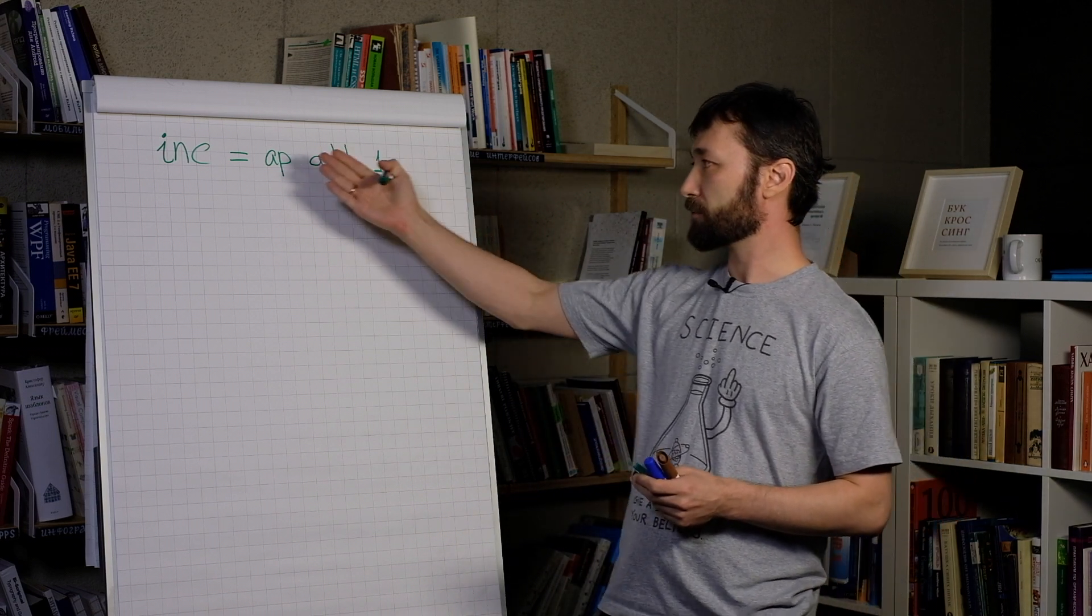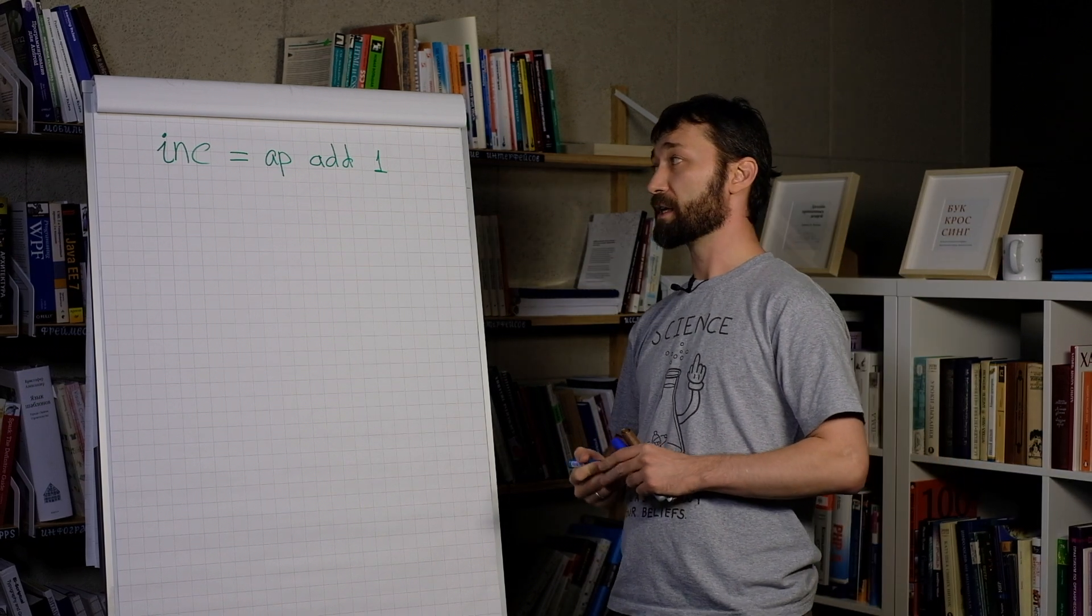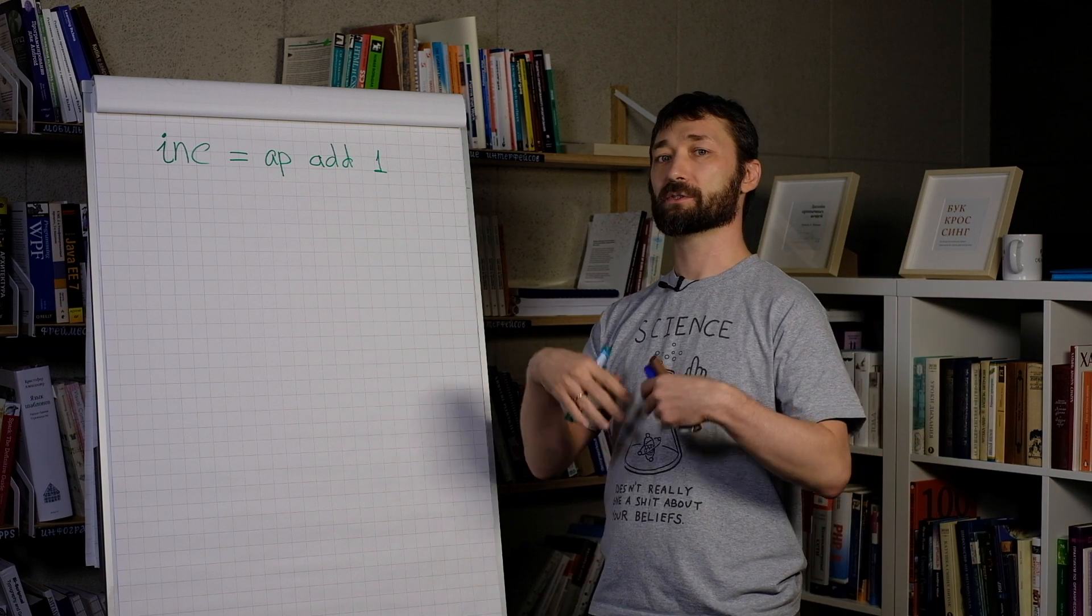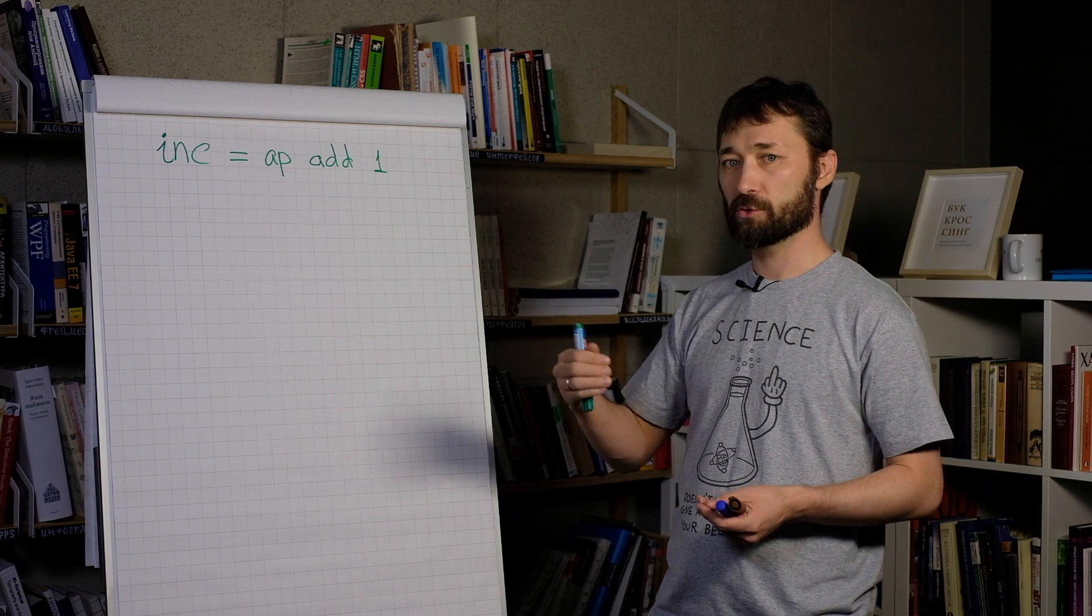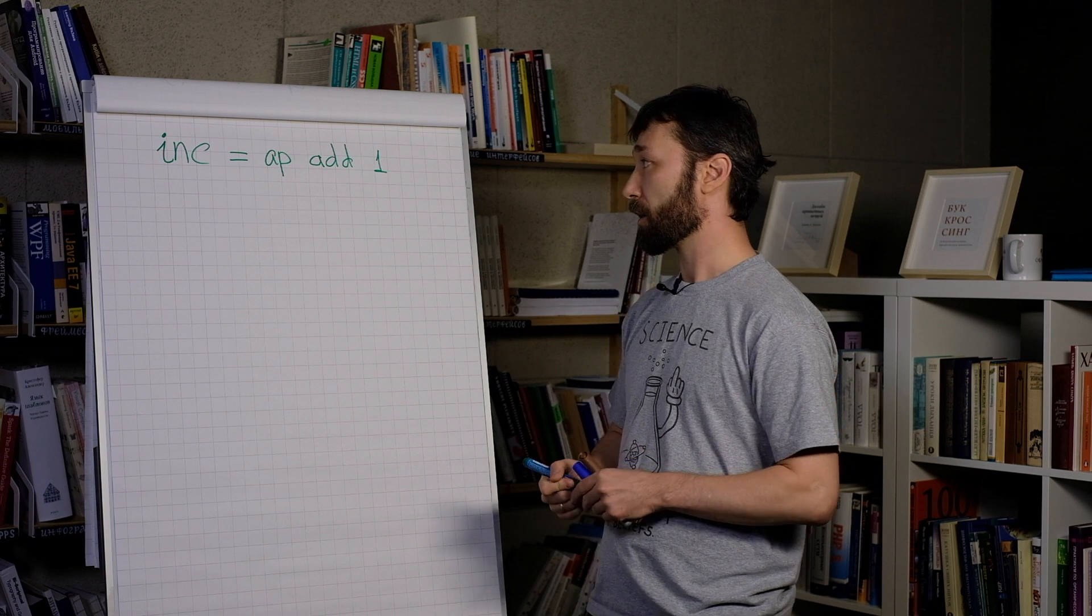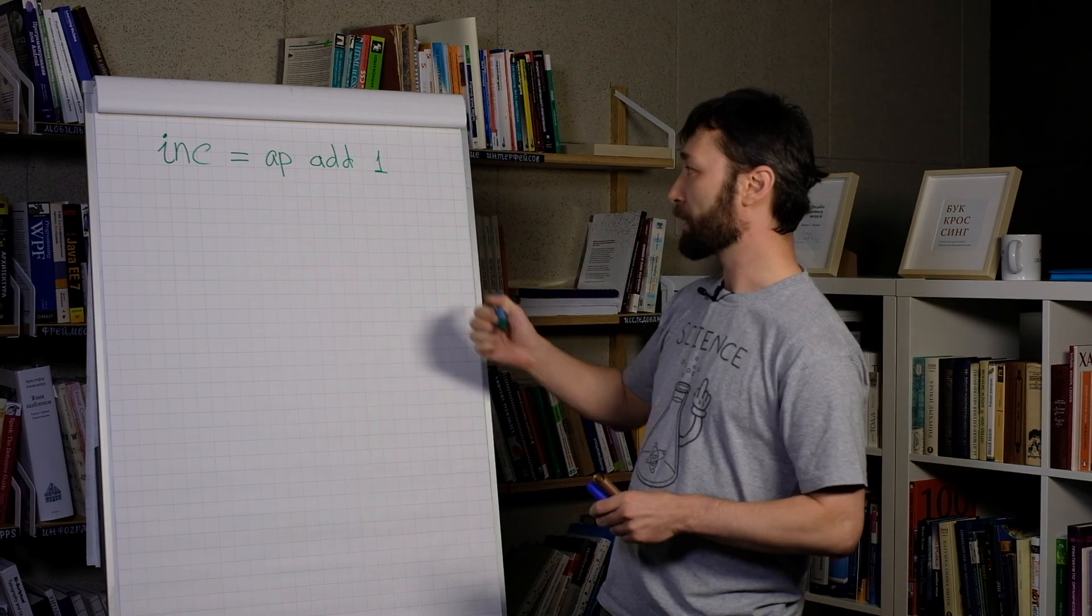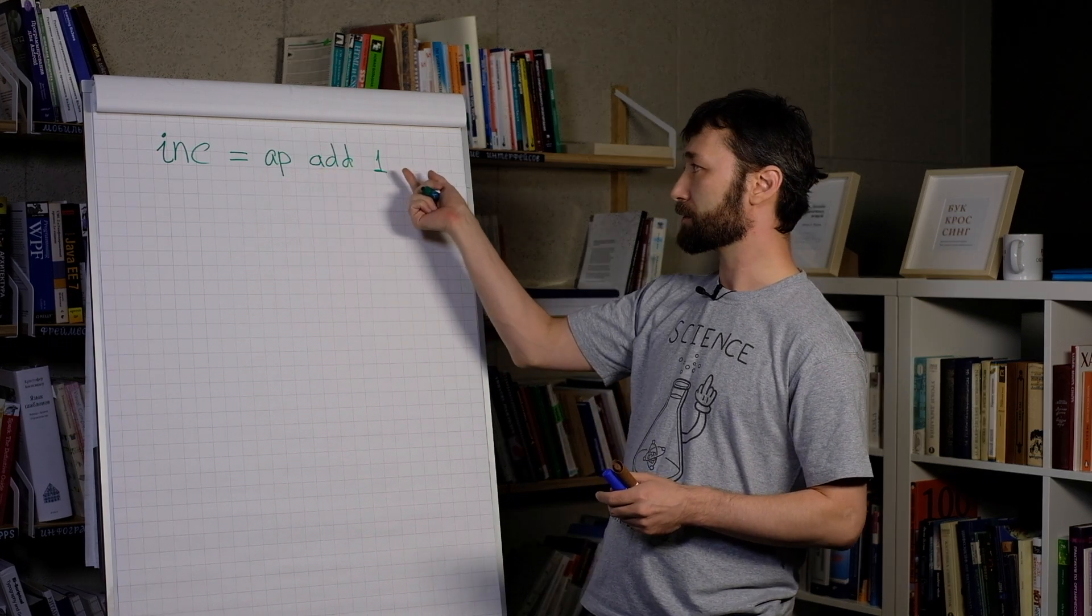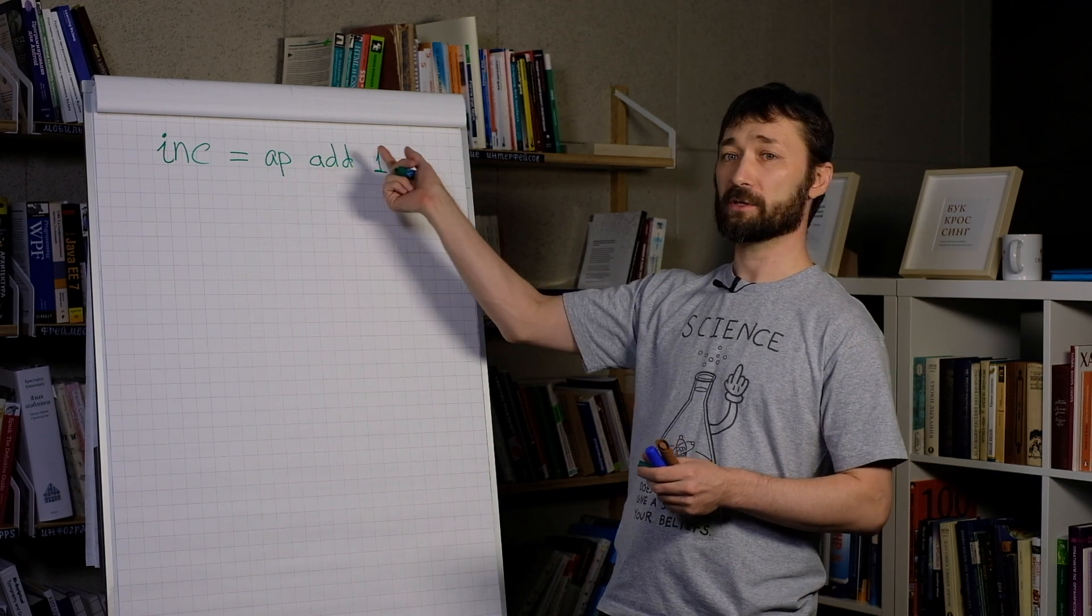And as a result, we receive another function. So we believe that this is not a special case for the add function, but some general rule that you can pass only one argument to any function. And if it's true, then we understand the app operator. It just has two arguments. First is a function, second is an argument. And it passes the argument to the function.